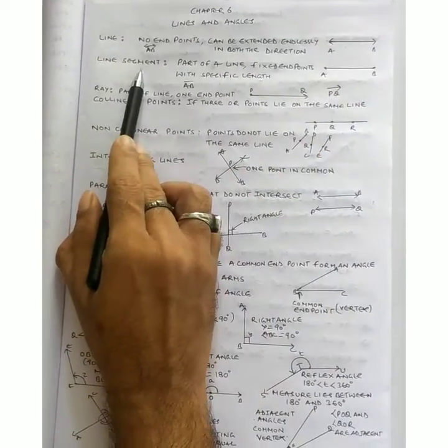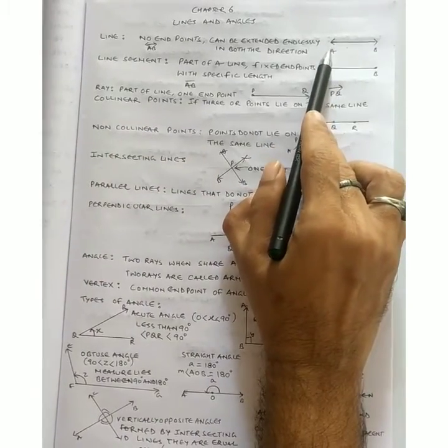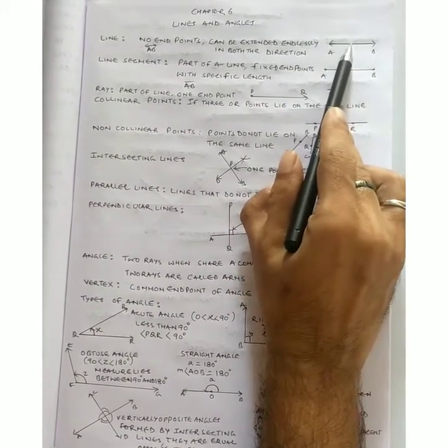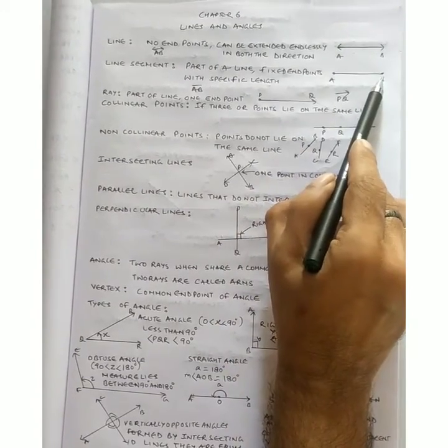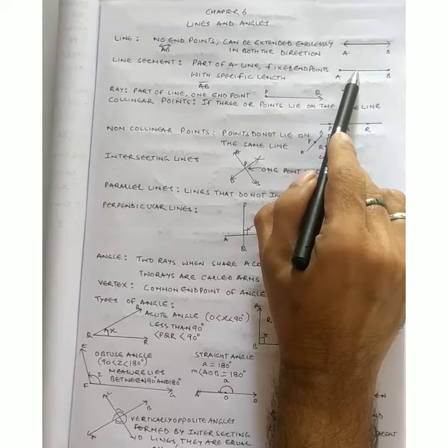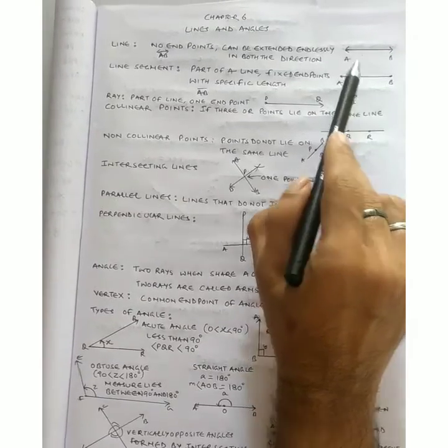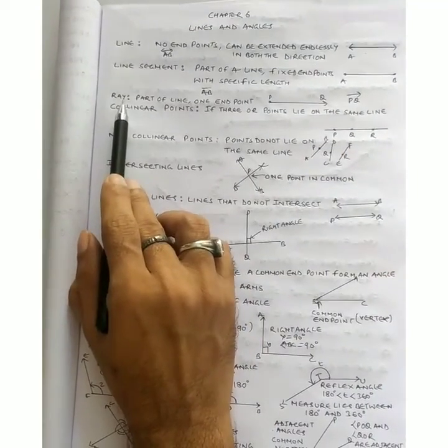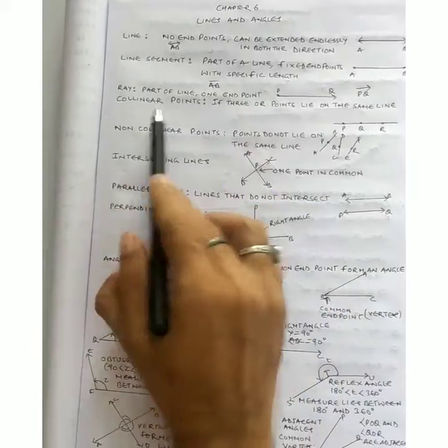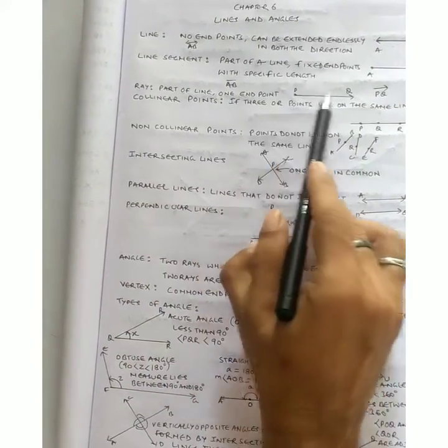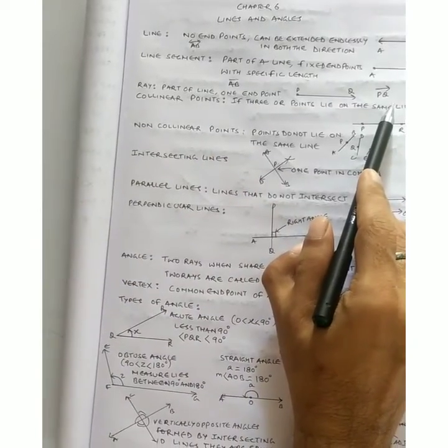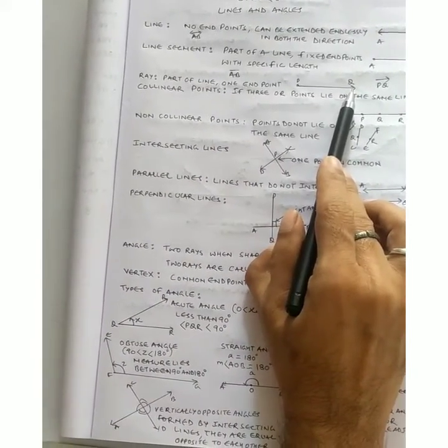Line segment. Line segment is a part of a line. This is a line. It has fixed end points and it has specific length. Next, what is ray? Ray is part of a line. One end point is going in one direction. That is ray. Here, PQ is a ray.